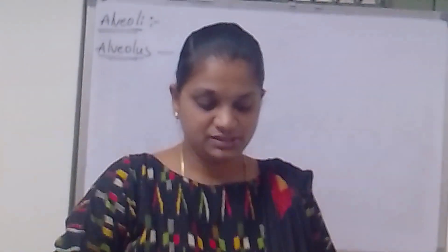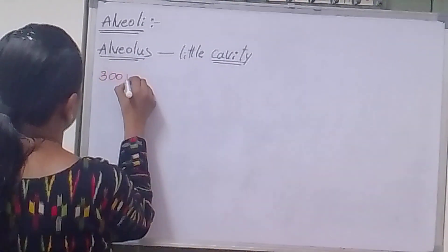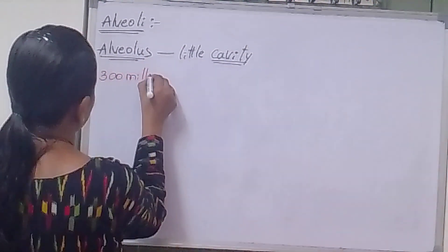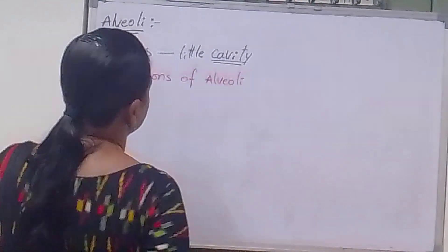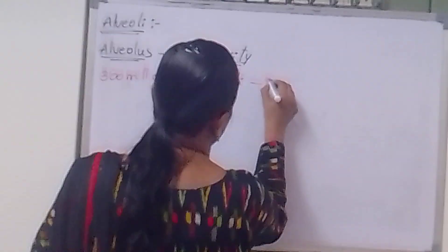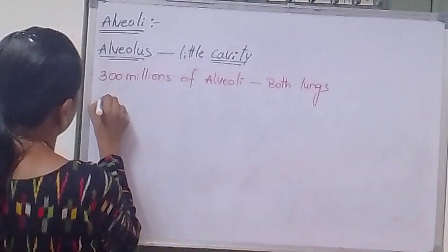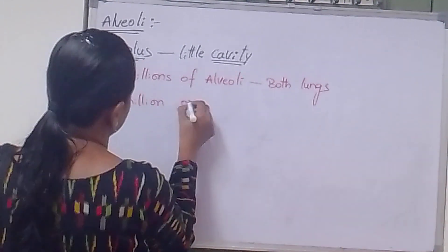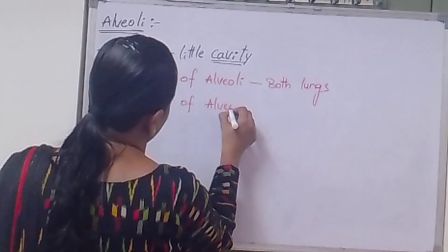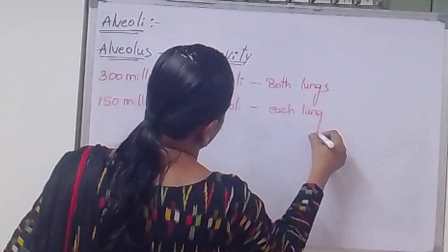So in both our lungs, how many Alveoli are present? There are 300 million Alveoli present in both lungs, whereas 150 million Alveoli are present in each lung.